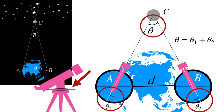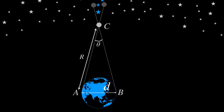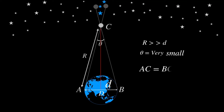There may be one more question: why are we not measuring the direct distance of C from the center of the earth? Since R, the distance of the planet, is far greater than the distance between two observation locations A and B, the angle theta is very small — in the range of one arc second, where one arc second is 1/3600th of one degree. When theta is so small, we can say all three distances of the planet from points A, B, and D are the same.